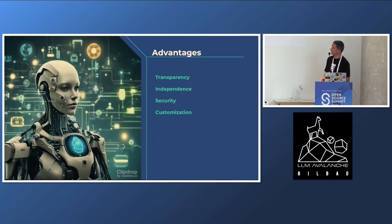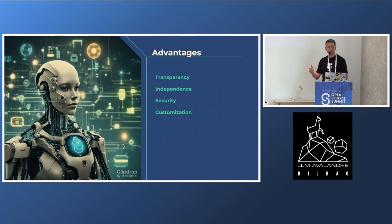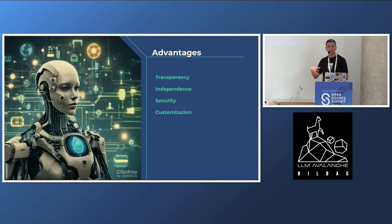Here are some advantages of using Open Source AI. Transparency of the data used for training or fine-tuning is very much apparent. With a proprietary model, you don't know what data was used to train or fine-tune it. There's also independence — you're not dependent on a company making changes to those models. If you want to fine-tune or change the direction of those models, with Open Source you can do that. Also security — it's much more secure, you don't have to share data with a third party. You can run this on-prem or using privacy-enhancing technologies in the cloud. And finally, customization — you have total control over the data, the model, and the software.